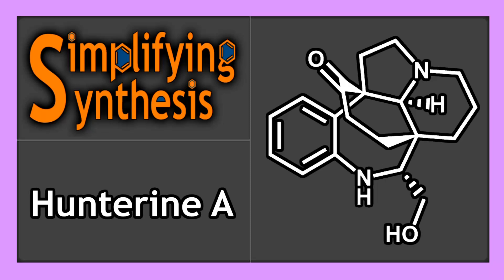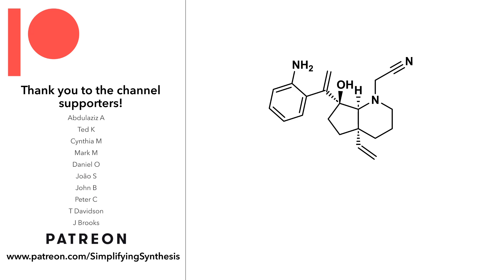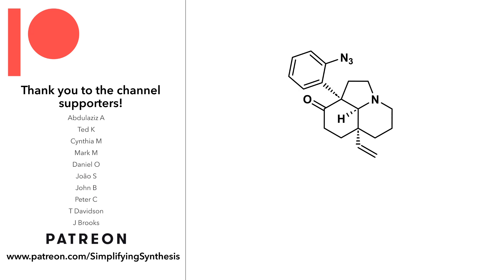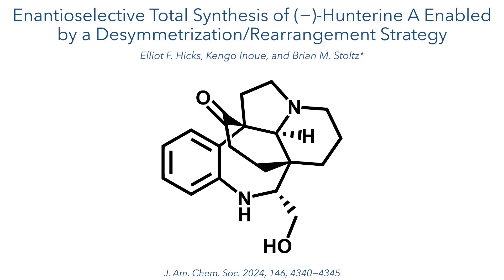Welcome back to Simplifying Synthesis. In this video, we are going to look at the total synthesis of Hunterine A. This work was published in JACS by the Stoltz Group in their paper 'An Enantioselective Total Synthesis of Hunterine A, Enabled by a Desymmetrization Rearrangement Strategy.'